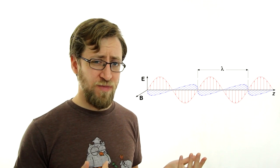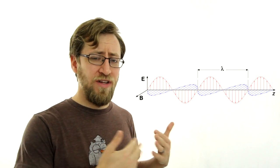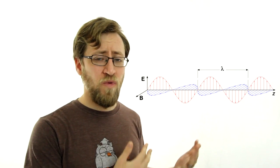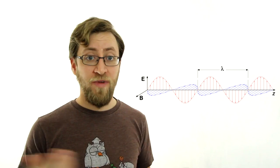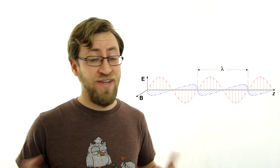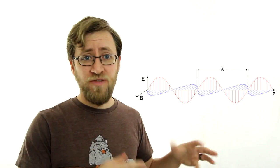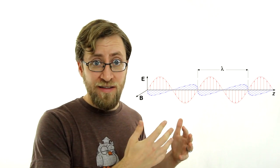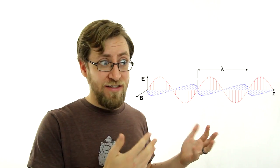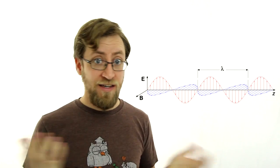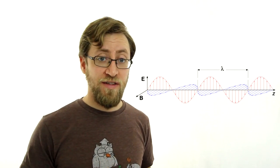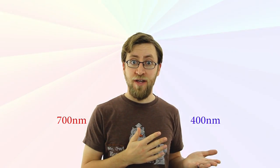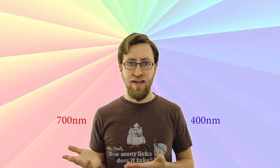A laser beam looks kind of like this picture because it generally has one phase, one wavelength. But normal everyday light is really complicated. It has a whole bunch of polarities and wavelengths and phases all at the same time. Light is way more awesome than this diagram.